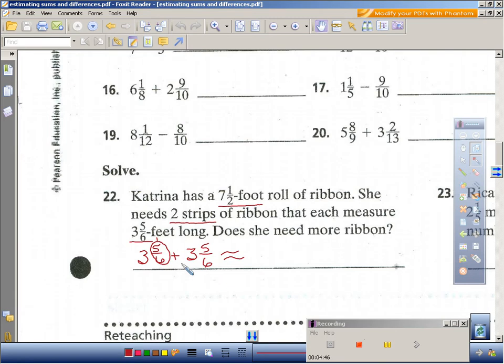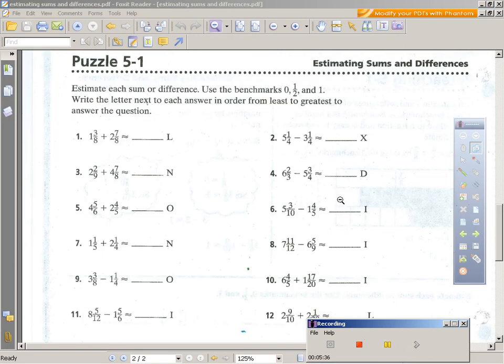So that would be four. Benchmarked five-sixths again, one. And that would be four. So four plus four is eight. If she's got seven and a half feet roll of ribbon, does she need more ribbon? The answer is yes. Remember that this is an estimation. That's what we're trying to get across here is to learn how to estimate. And this is a good real-life example of how you can do it really quick. I would know, wait a minute, I don't have enough ribbon.